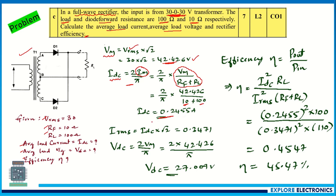The average load current Idc is 0.2455 amps. We also calculate Irms = √2 × Idc = 0.3471 A. For average load voltage Vdc = 2Vm / π: substituting Vm = 42.426 gives Vdc = 27.009 volts.